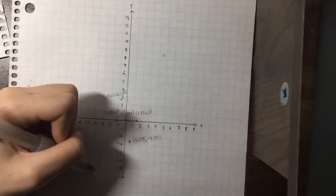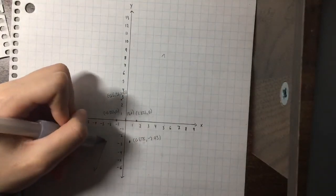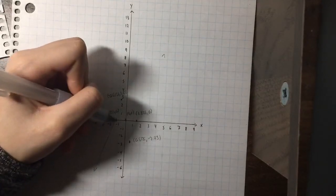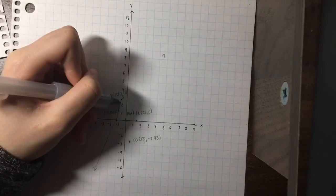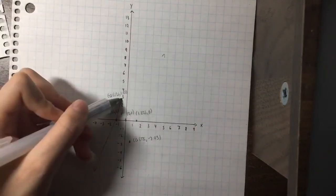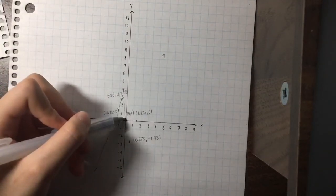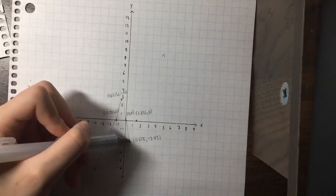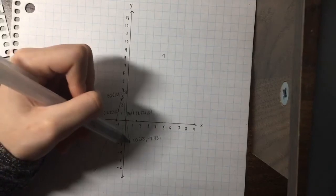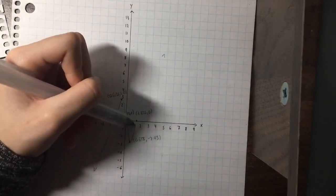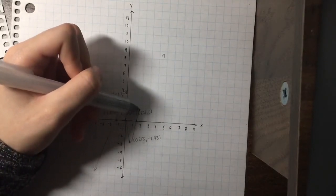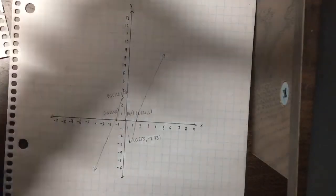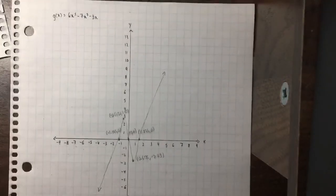Starting in quadrant 3, the graph rises toward the first x-intercept, changes signs and continues up to the local maximum, then comes down to the next x-intercept where it changes signs again, goes down to the local minimum, rises to the final x-intercept, changes signs once more, and continues upward infinitely into quadrant 1. This is the completed graph for this function.